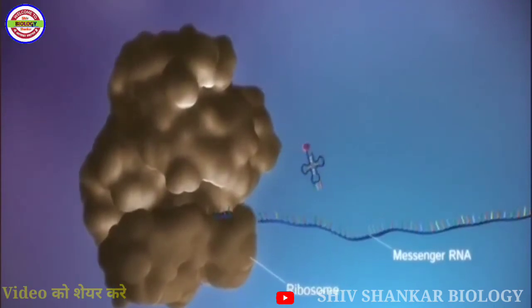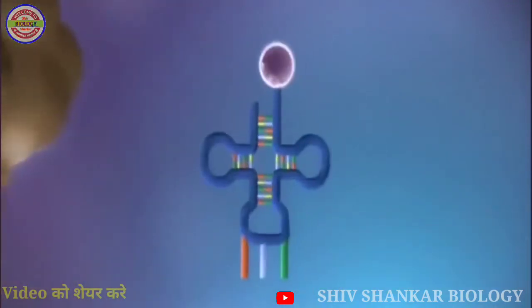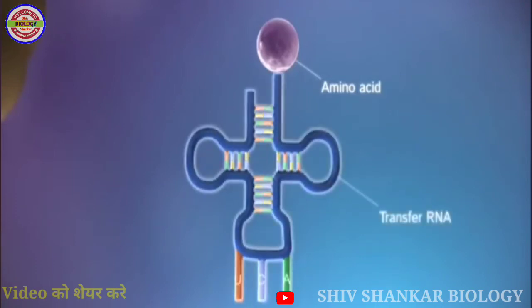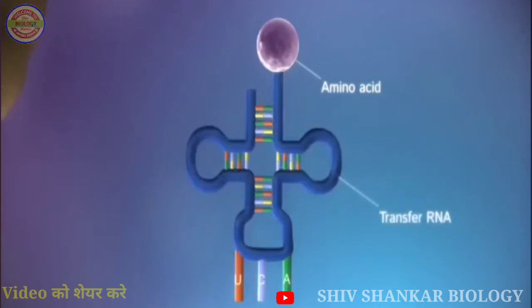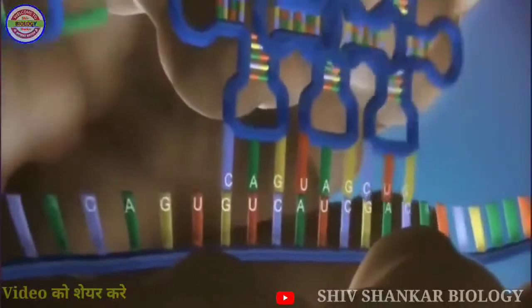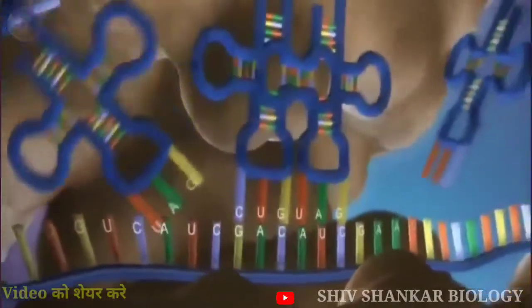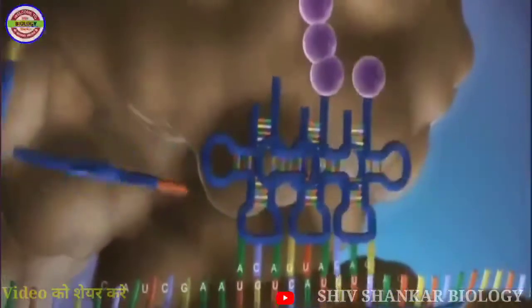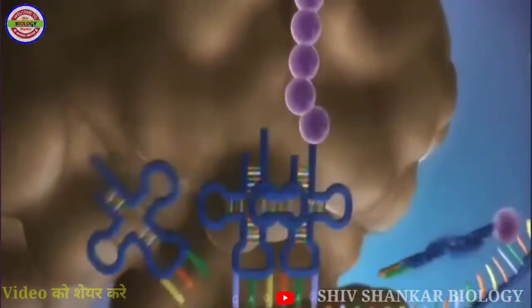Protein factories in the cytoplasm called ribosomes bind to the messenger RNA. The ribosome reads the code in the messenger RNA to produce a chain made up of amino acids. There are 20 different types of amino acids. Transfer RNA molecules carry the amino acids to the ribosome. The messenger RNA is read three bases at a time.